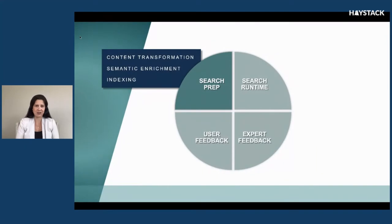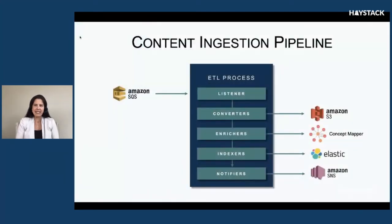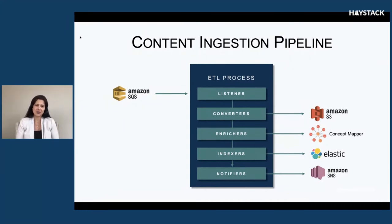Let's take a peek at our search prep environment. This is an architectural overview of our content ingestion pipeline, which handles two main use cases. First, it handles a use case where a content editor has published a piece of content that is ready to be searchable. Another use case is when we completely reprocess all of the content in our system — we refer to this as a content ingestion process. Regardless of either use case, the pipeline behaves the same.